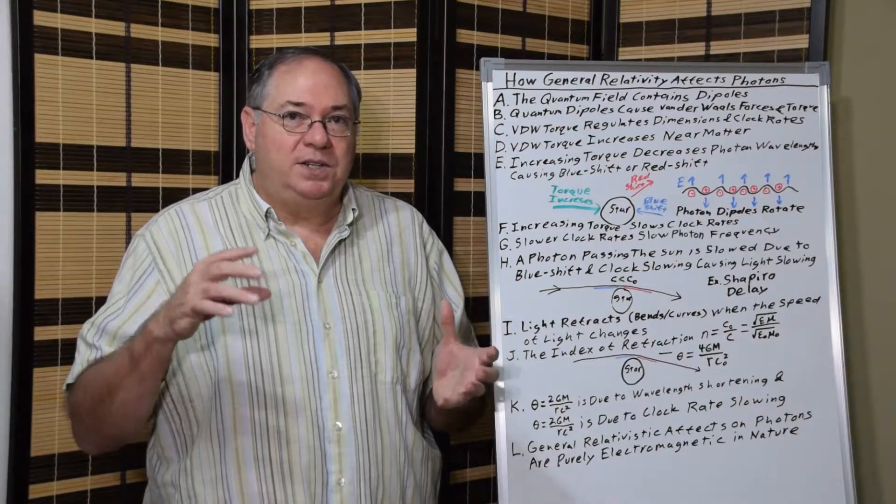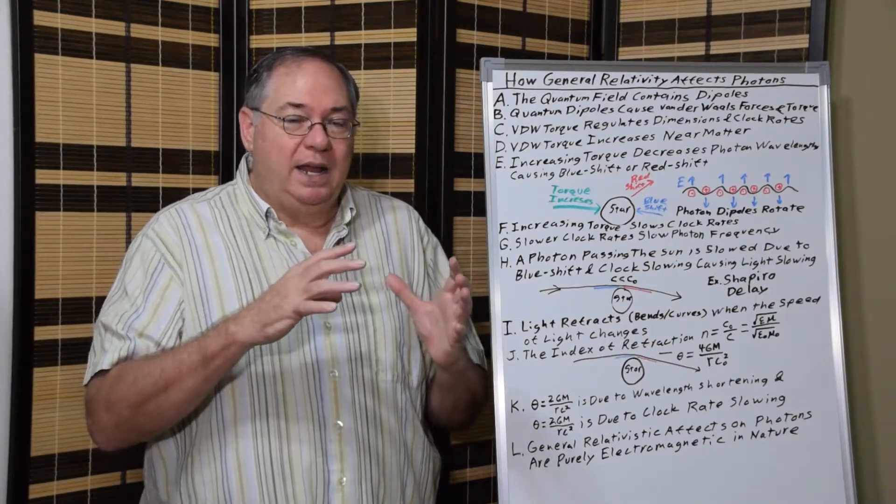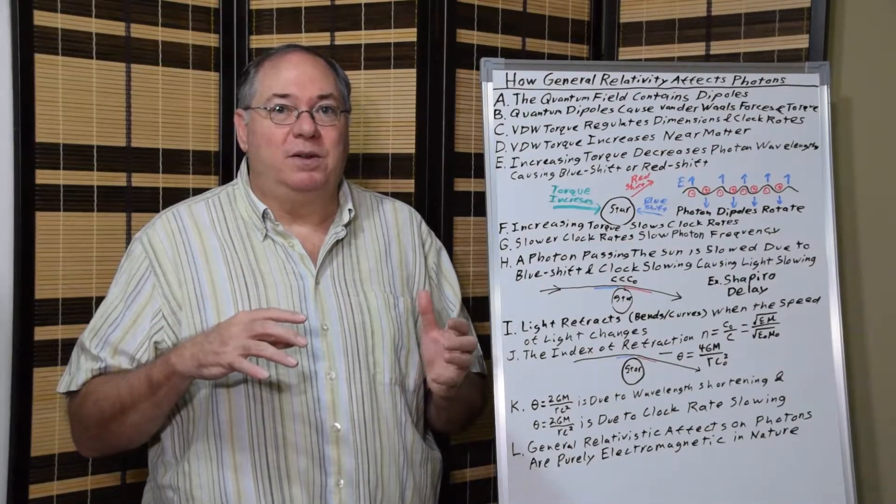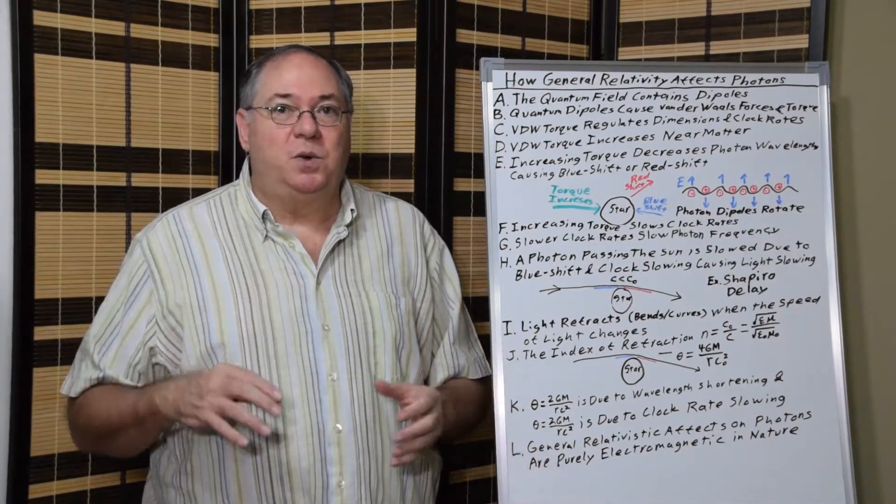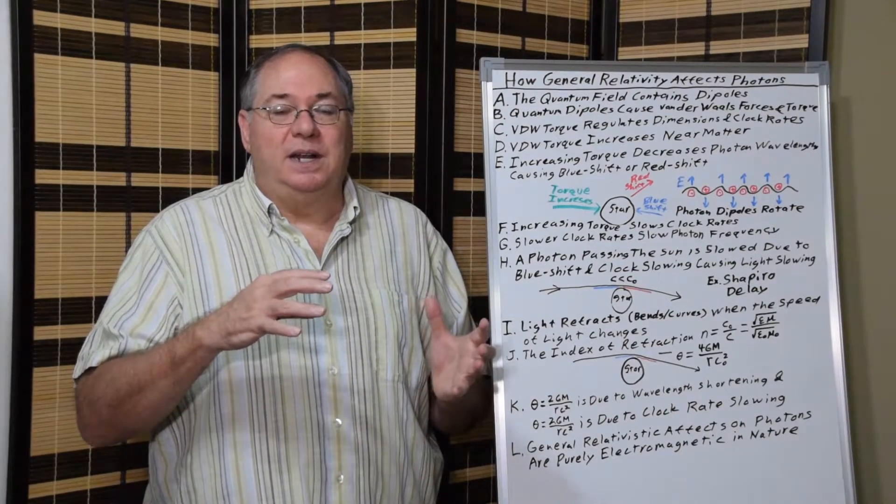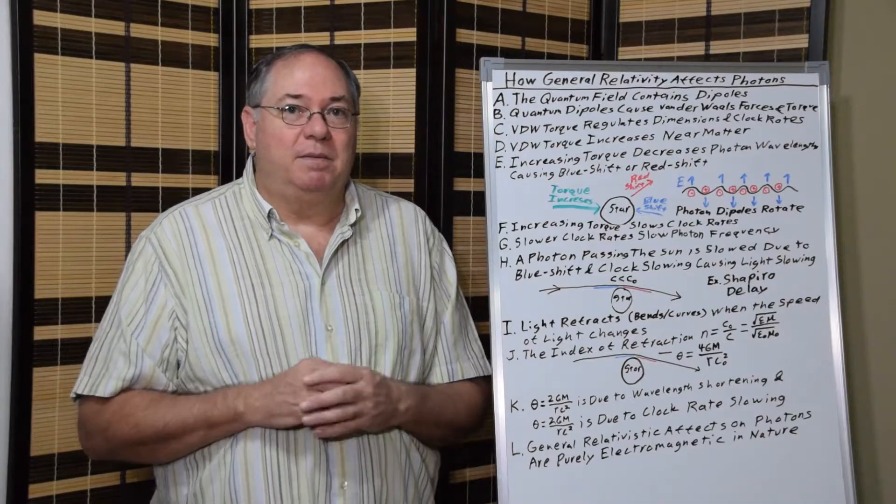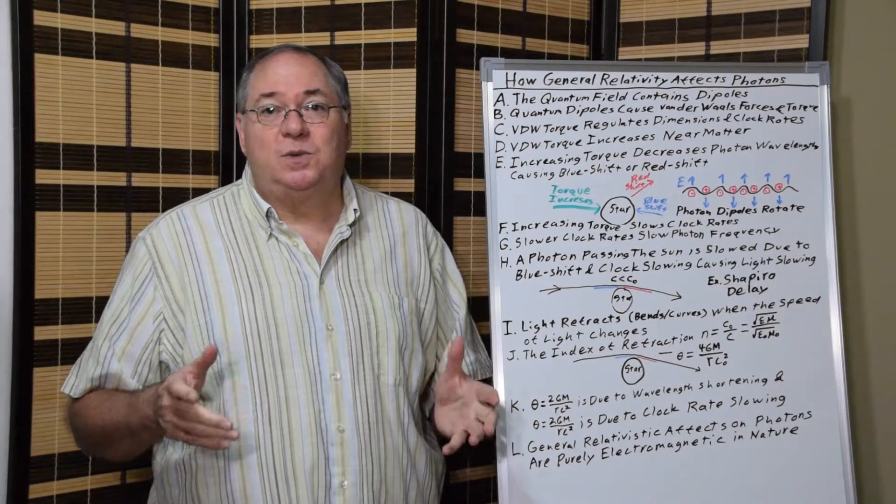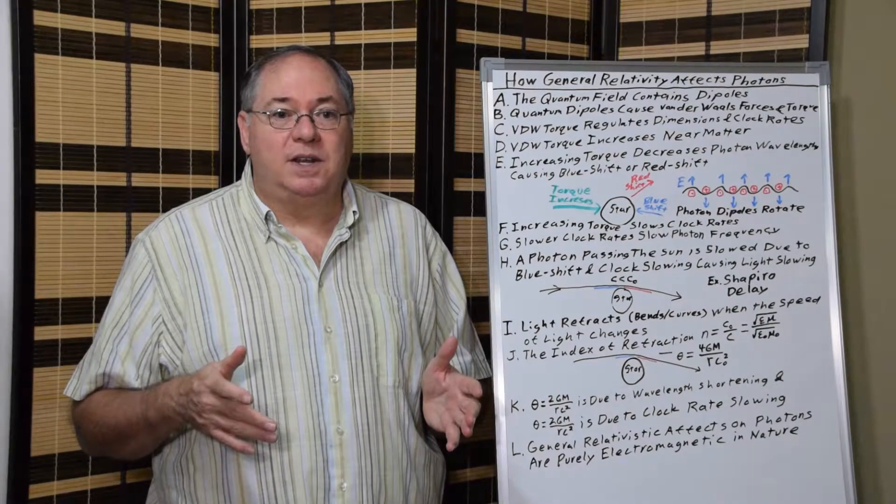So you have this continual interaction between a stationary body or a moving body and the quantum field that relates to the torque. The more matter you have, the greater the torque in the vicinity of that body of matter. And this is where the general relativistic effects come from.